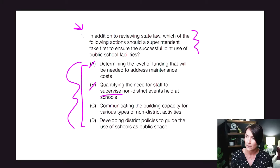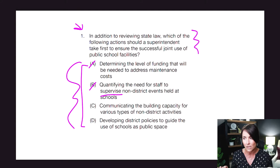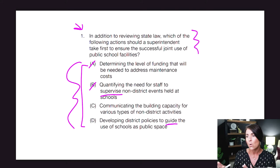C: communicating the building capacity for various types of non-district activities. Communication — I like C. D: developing district policies to guide the use of schools as public space. We have district policies, which goes with procedures — procedures was on my good words list. We're talking about 'guide,' not 'require,' so we don't have negative words. I like C and D, so I've narrowed it down. Let's read the question.